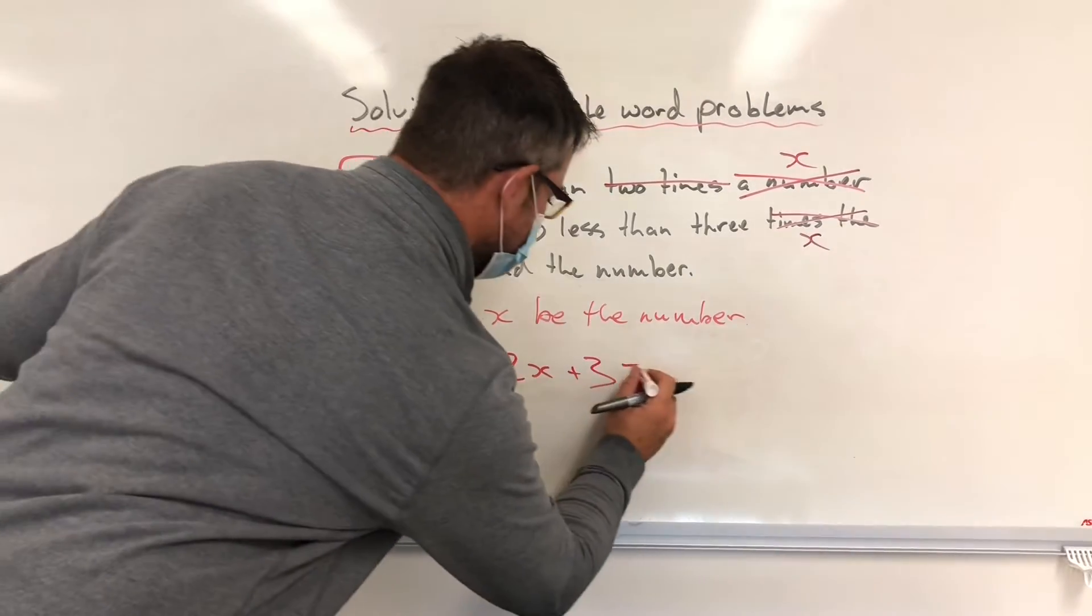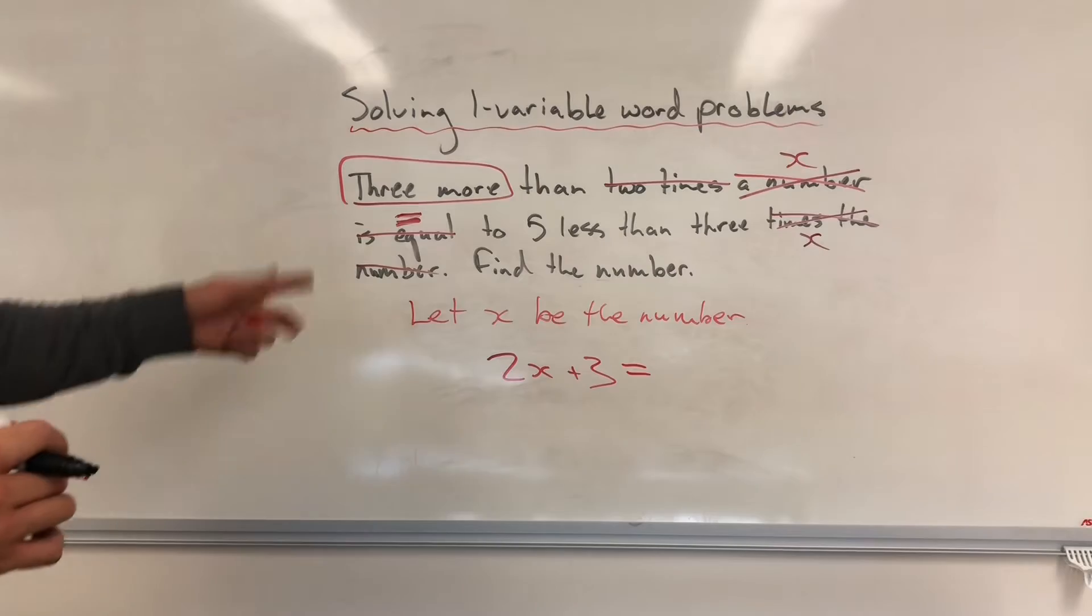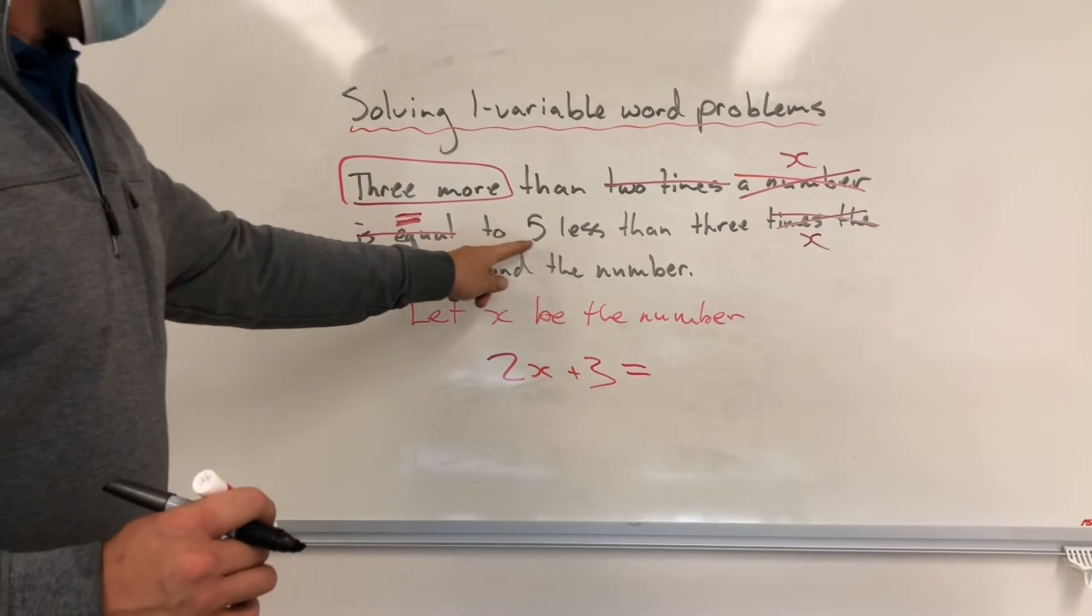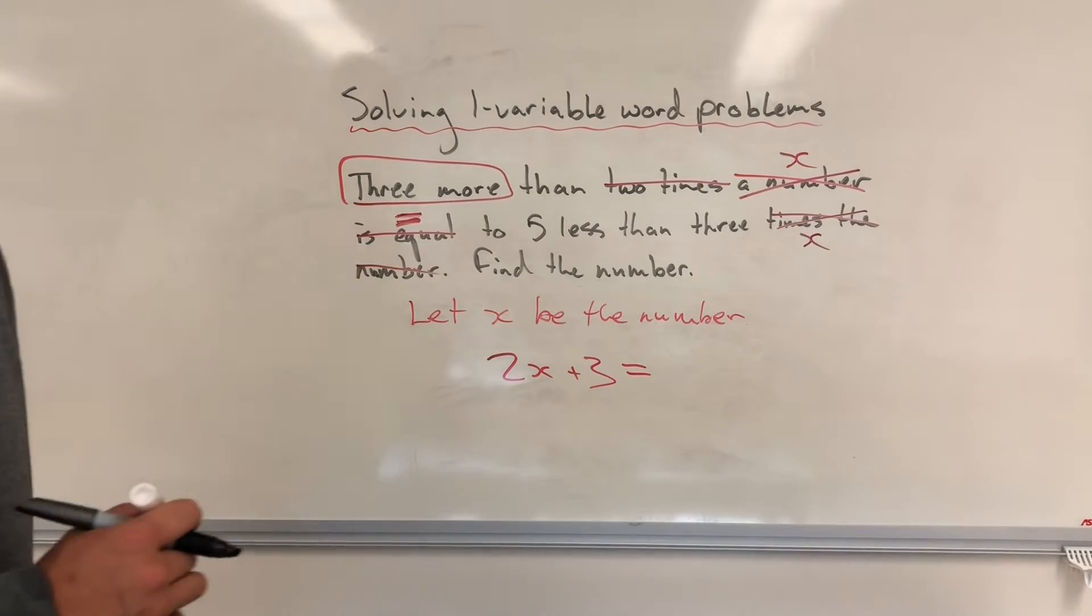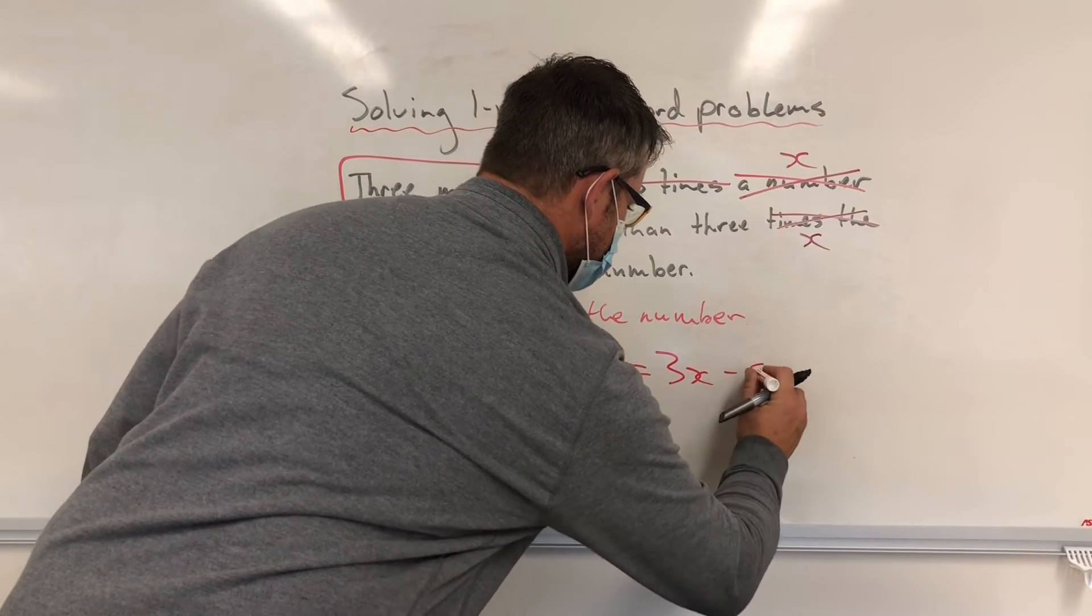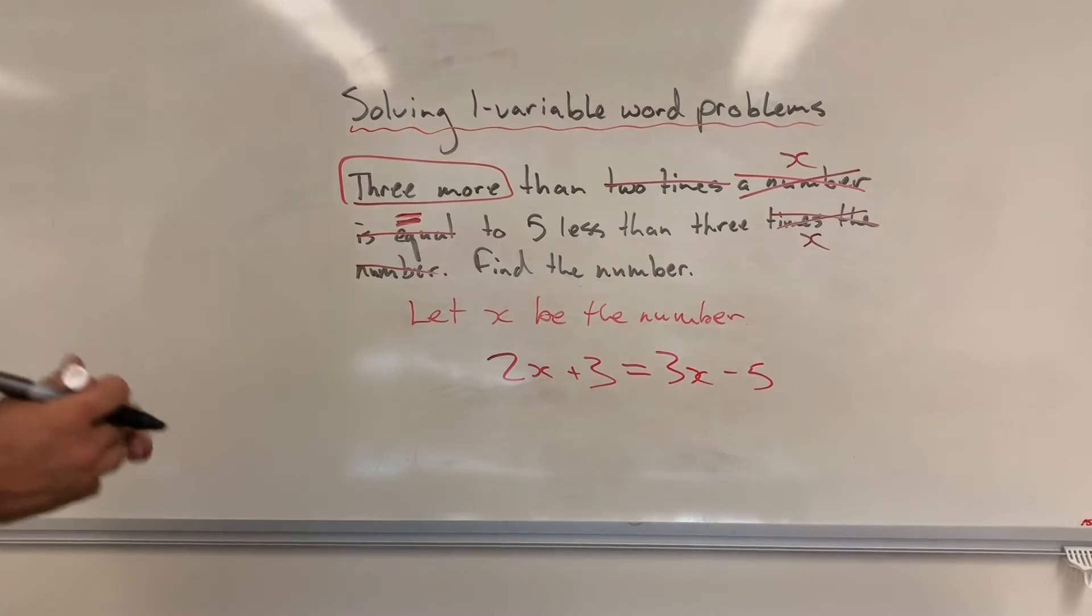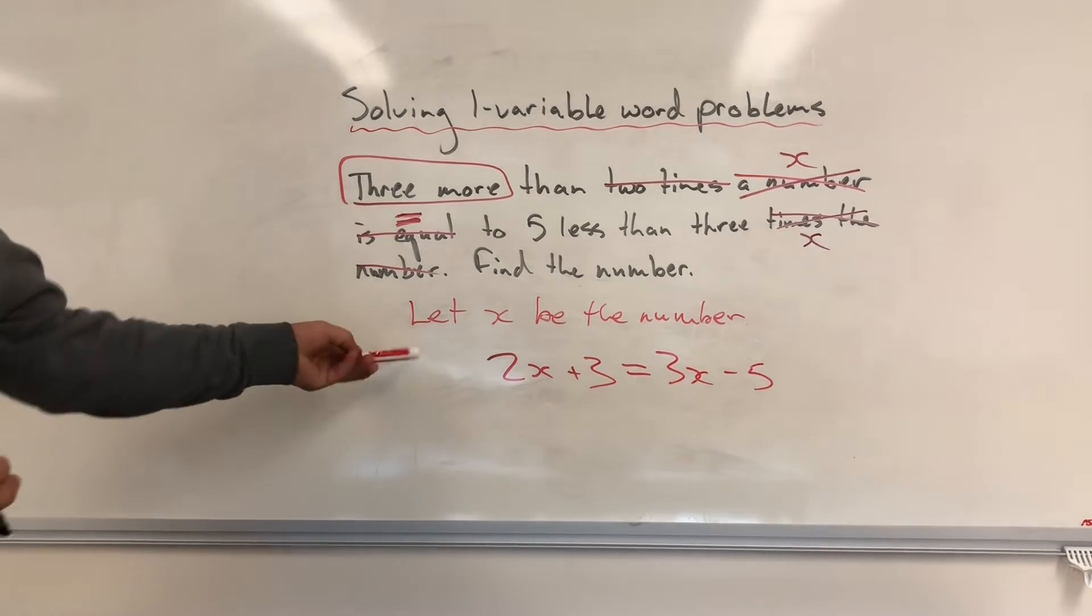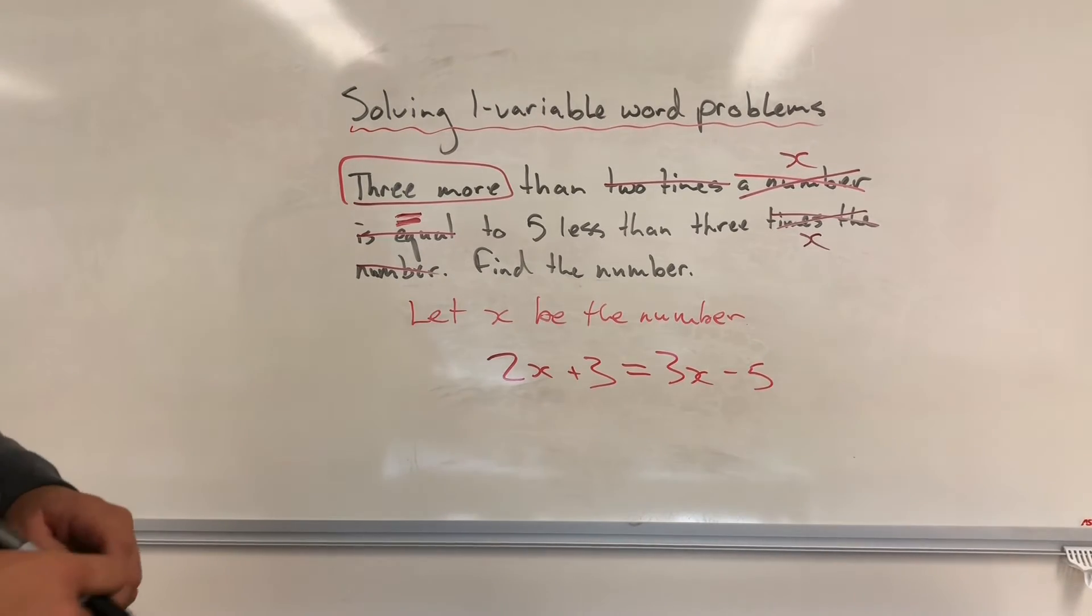Now that's equal to, and now I'll look on the other side, five less than three times X. So I'll start with three times X. And I'll do five less by subtracting. And now we're at a situation where I can solve this problem.